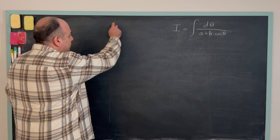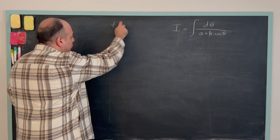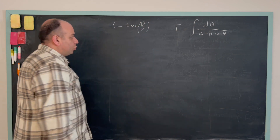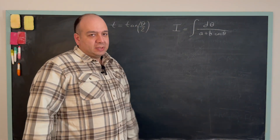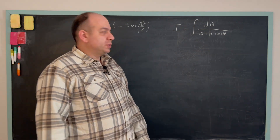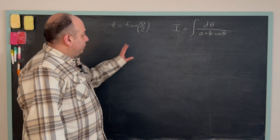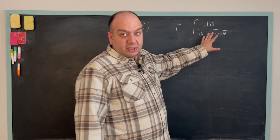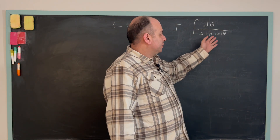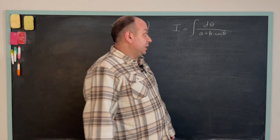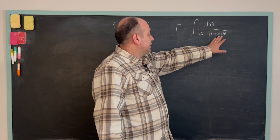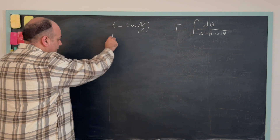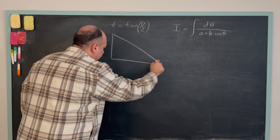Quite interesting. What we do is we say t is equal to a new variable equal to tangent of theta over 2. When we make this substitution, the integral takes simpler forms and we can handle it. Before we move on, let's write down sine theta and cosine theta in terms of t, because in the integrals we may have cosine, sine, or tangent functions. So we need to be able to write cosine and sine in terms of t. In order to do that, let me draw this geometry.